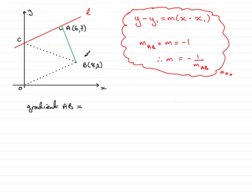Gradient of AB, difference in the y-coordinates divided by the difference in the x-coordinates. So if we say we start with 7 for the y-coordinate, it'll be 7 take away the 2 here, divided by, keep the order the same with the x-coordinates, 6 minus 8. If we work this out, what we get is 7 take 2 is 5, 6 take away 8 is minus 2. So we've got minus 5 over 2. So that's the gradient of AB.